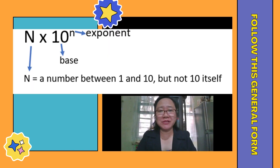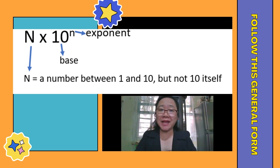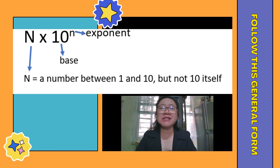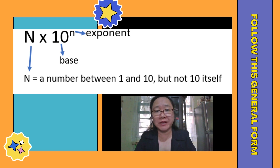Follow these general rules when writing scientific notation: N × 10^n, where capital N is a number between 1 and 10 but not 10 itself. In other words, this is our coefficient, and it is multiplied with 10, which is our base. And this base is raised to n, small n, which is our exponent.